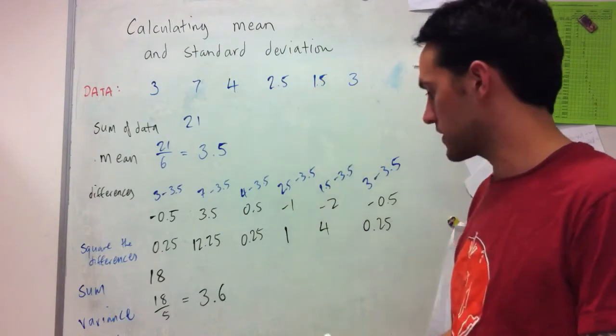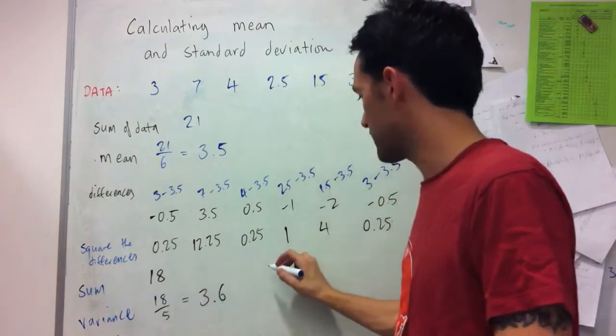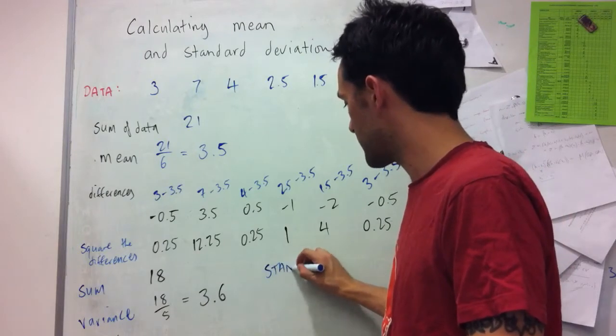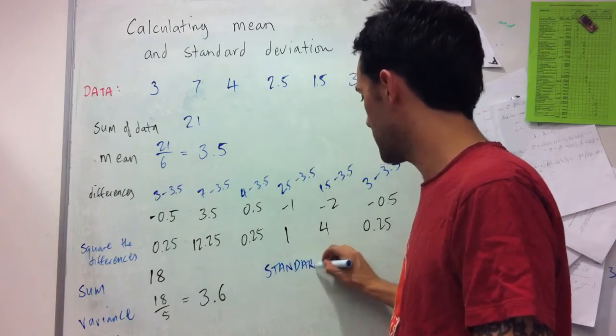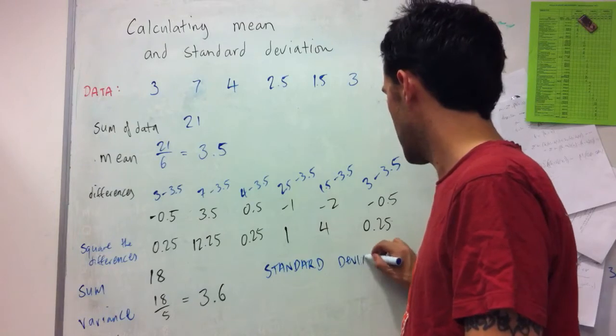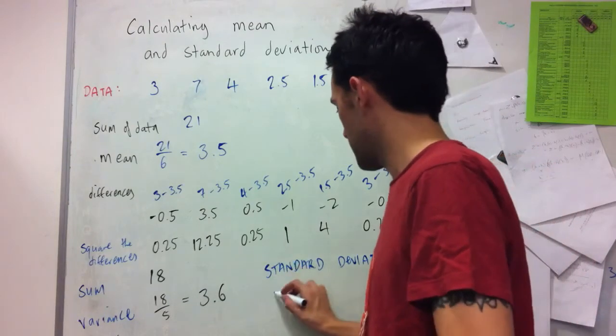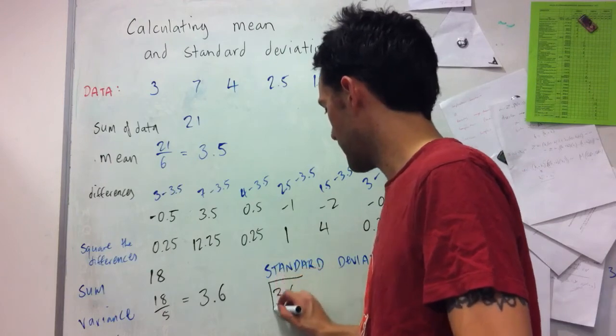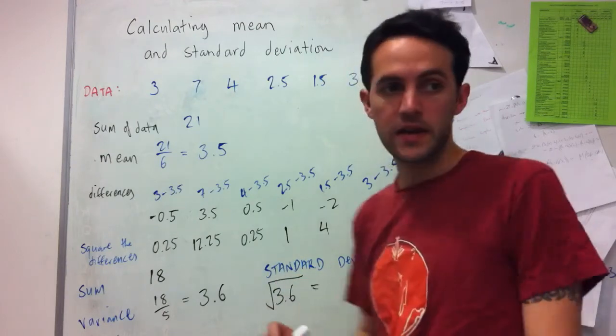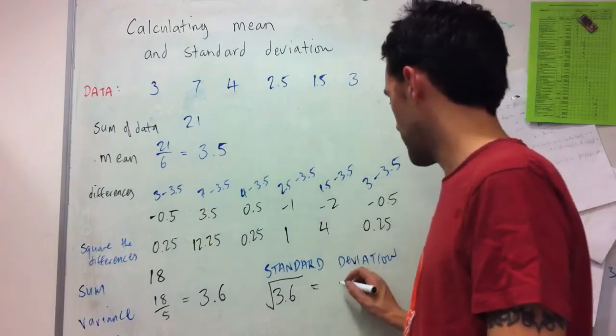So the final thing I do to calculate the standard deviation, I'll do it just here, is take the square root. So it's the square root of 3.6, which is about 1.9.